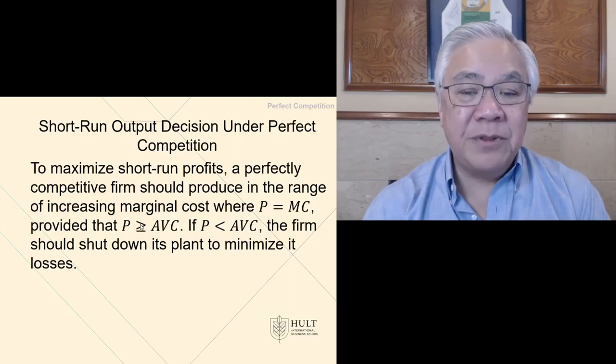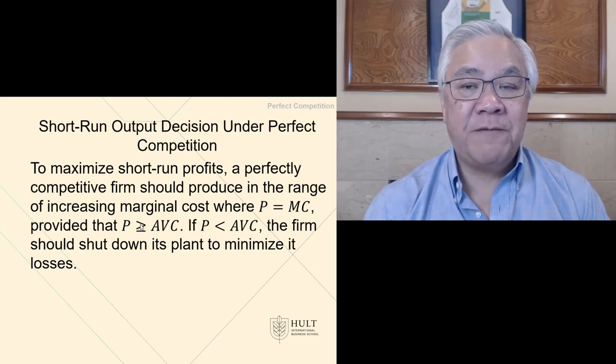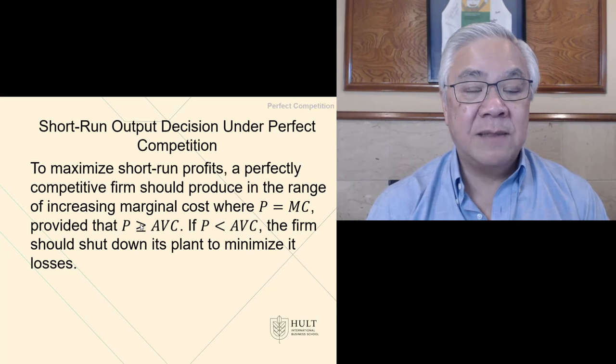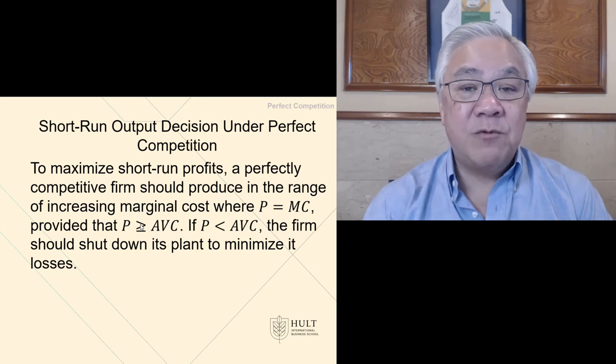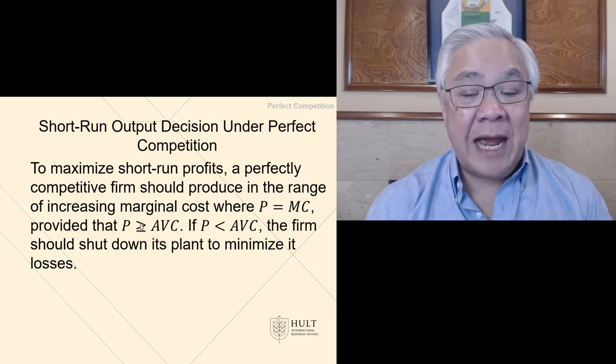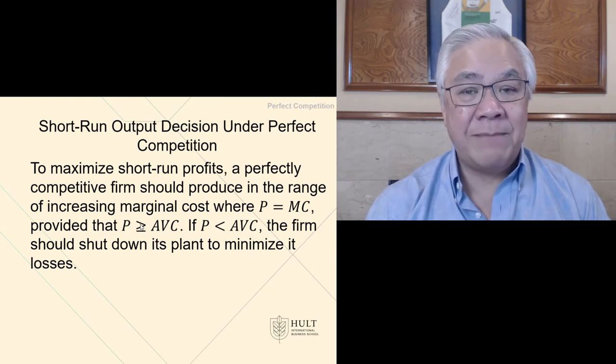Short run output decisions in this scenario then are to maximize short-term profits, the perfectly competitive firm will operate where price equals marginal cost, provided that price is greater than or equal to average variable cost. In the case where the price is less than the average variable cost, then the firm should shut it down because there is no optimal position in remaining in that business.